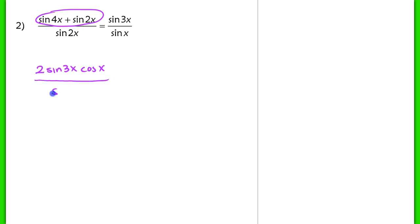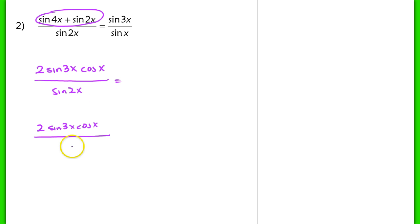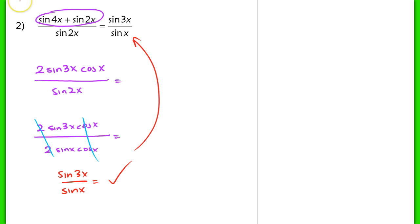I see sine 3x, which is good, but I need to eliminate the cosine x since it's not on the right-hand side. So I rewrite sine 2x using the double angle formula as 2·sin(x)·cos(x). That gives me 2·sin(3x)·cos(x) over 2·sin(x)·cos(x). I can cross out the 2s and the cosine x's, leaving sine 3x over sine x — exactly what I was trying to show.